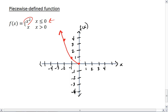Then, whenever x is greater than 0, we get the graph y equals x, which is just a straight line that goes up like that, and that is our piecewise function.